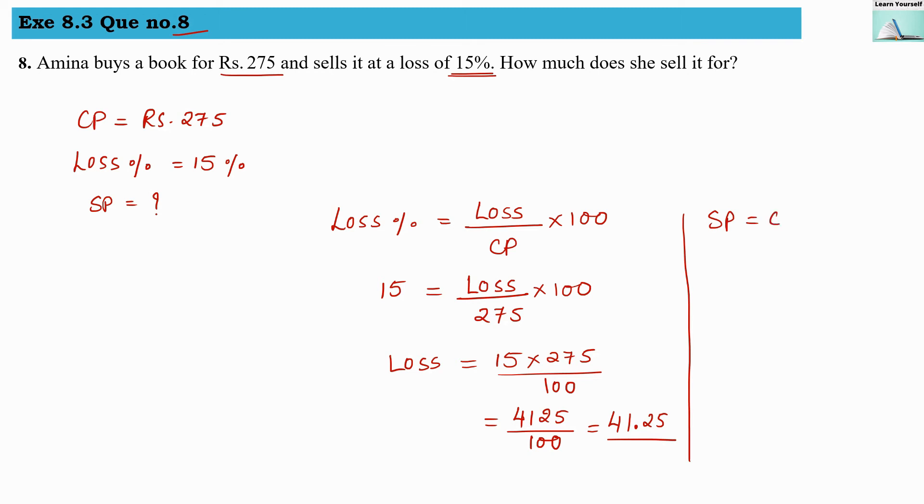Now to find out selling price, selling price will be equal to cost price minus loss. So our cost price is 275 and loss is 41.25. So our selling price will be 233.75.